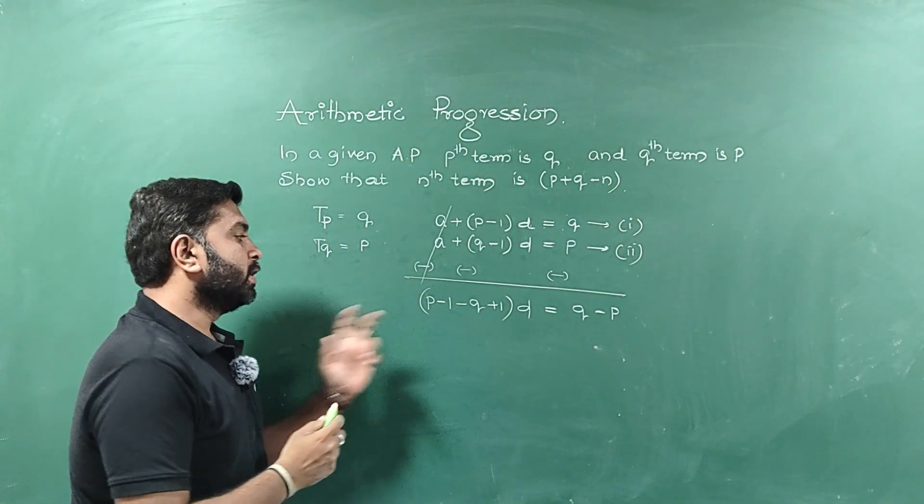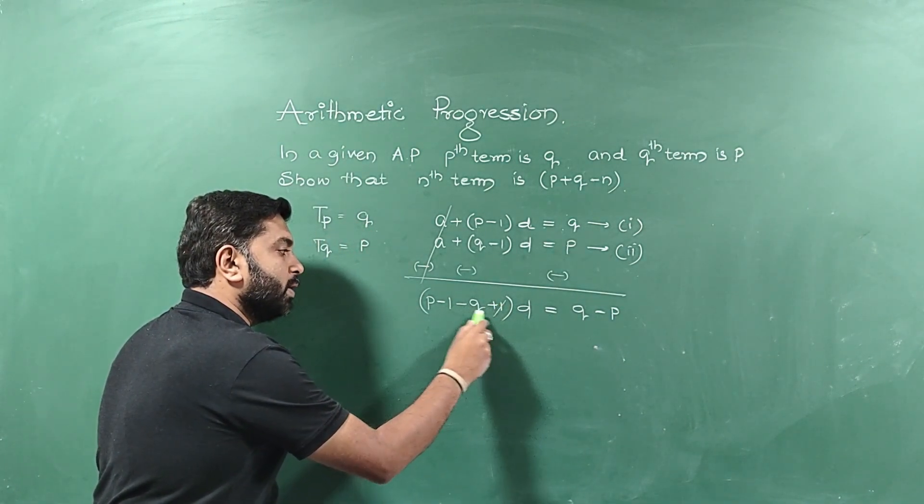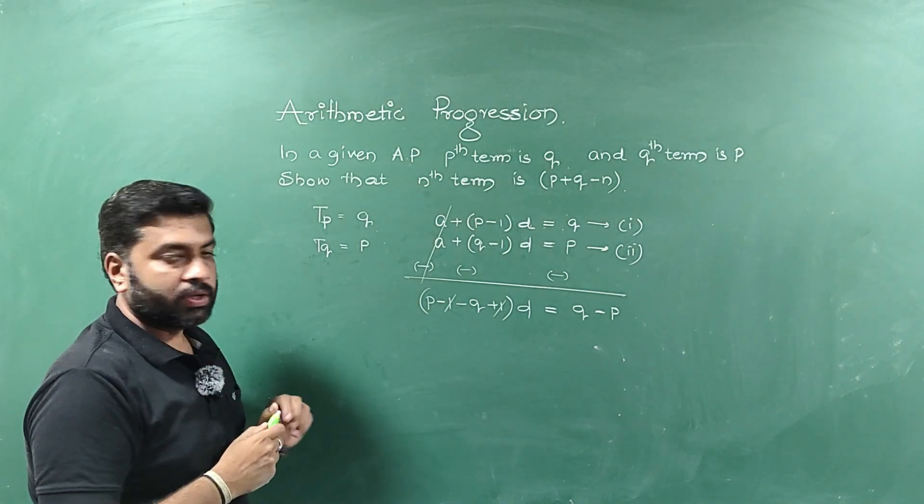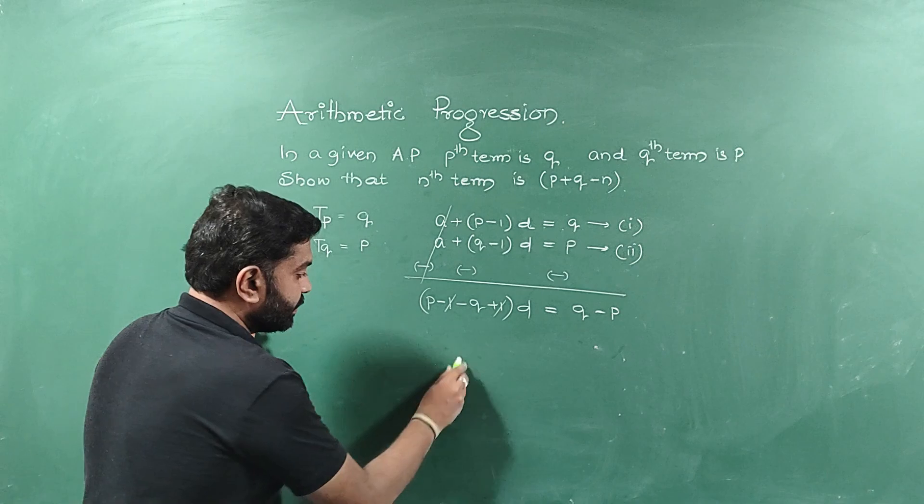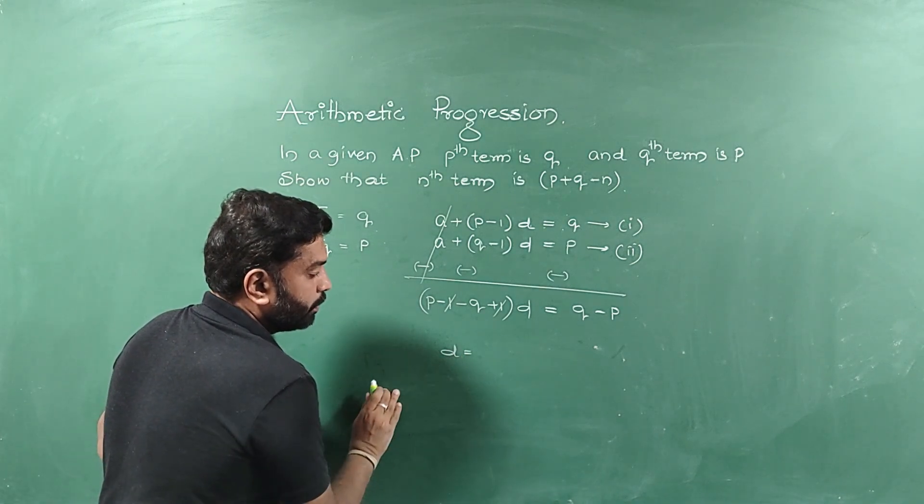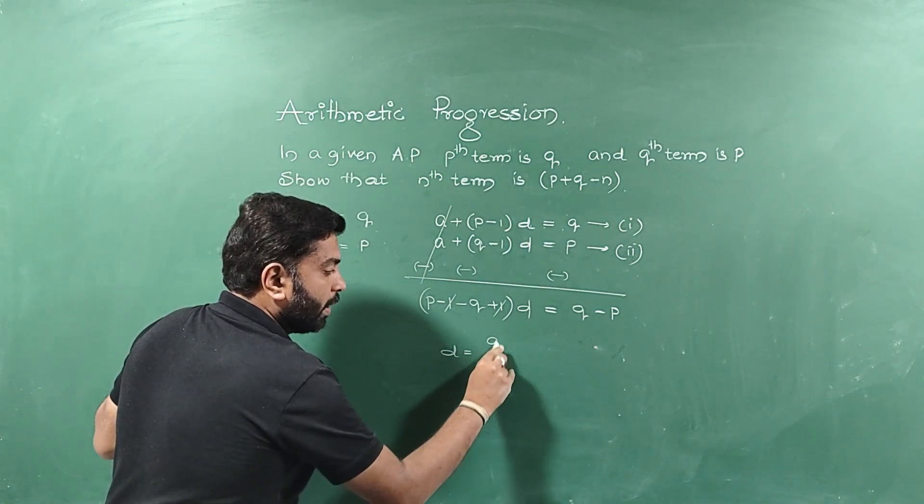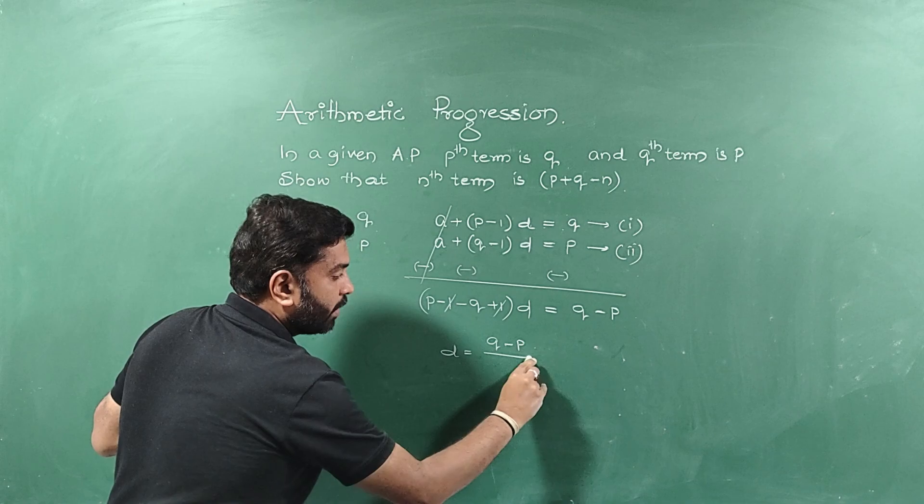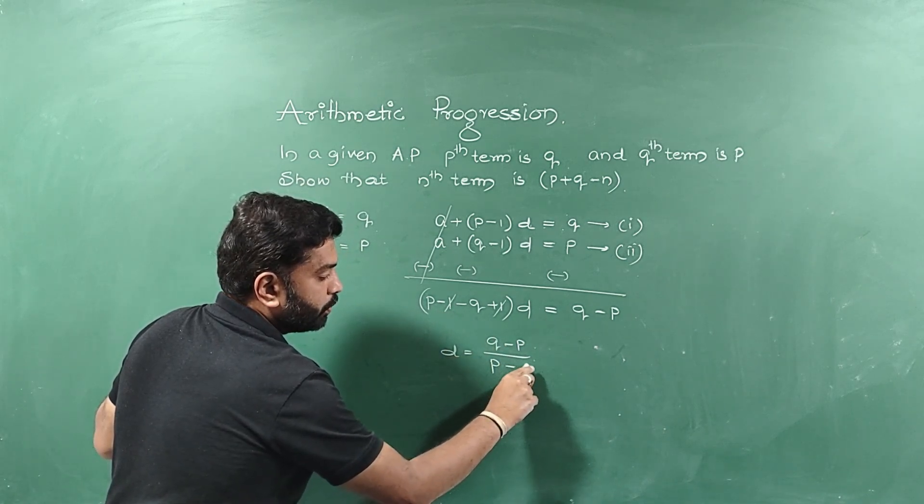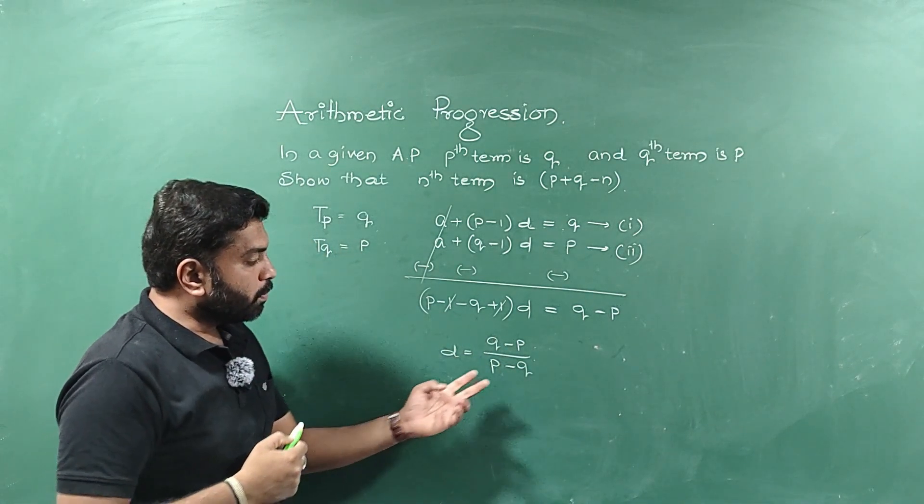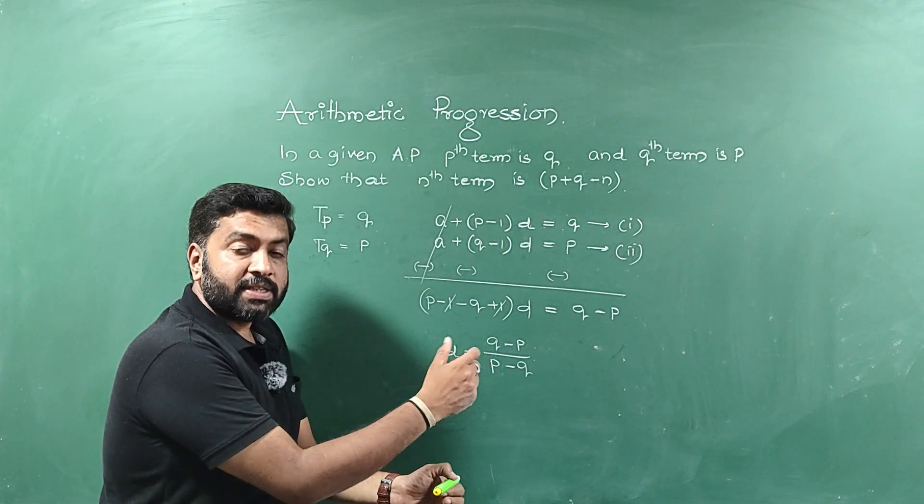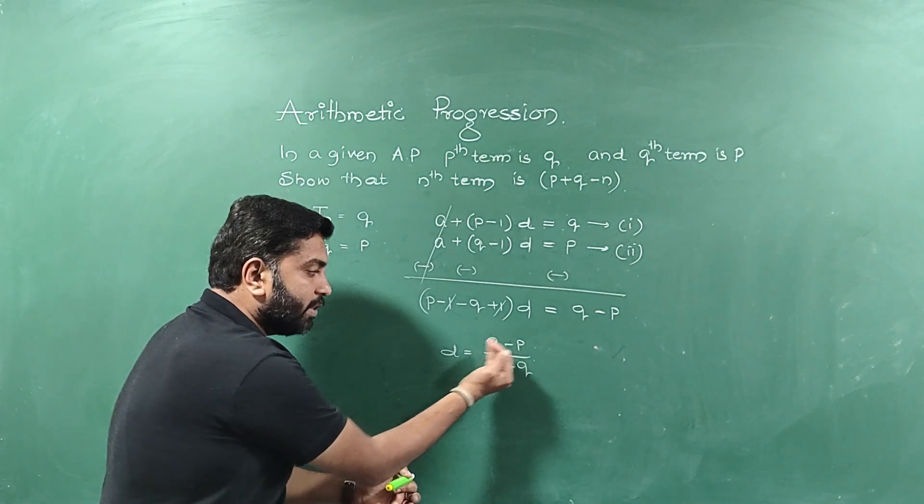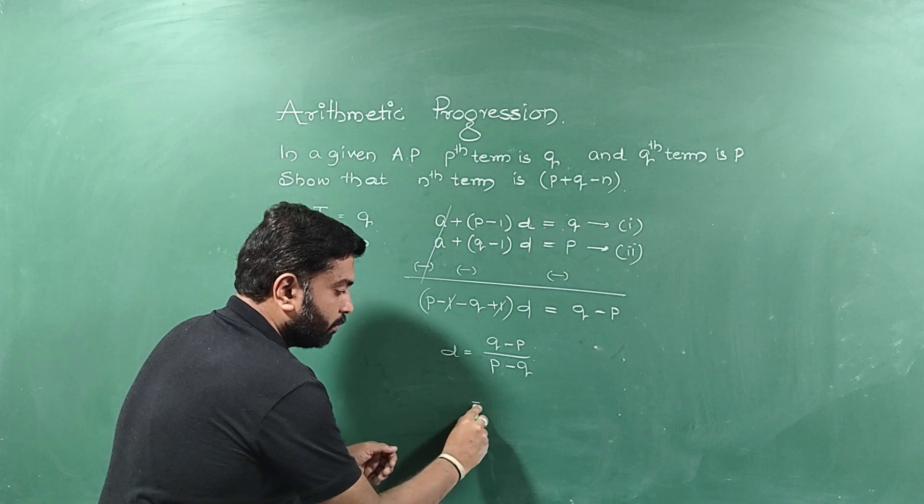Now let's calculate. Plus 1 and minus 1 get cancelled. What is remaining? P minus Q. Just shift this. So D is equal to Q minus P divided by P minus Q. So both look same. But in the numerator and denominator, there is a change in the sign.